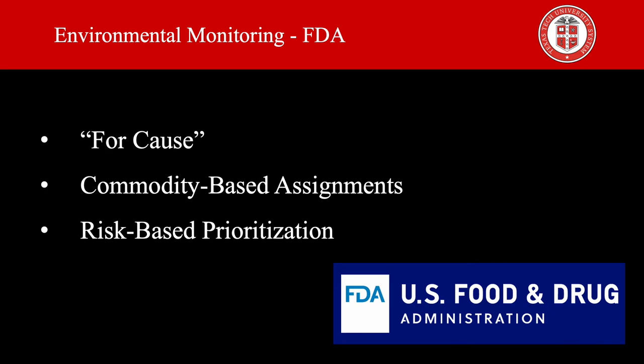The Food and Drug Administration, also known as the FDA, is the institution in charge to perform environmental sampling in food producing places. The FDA may conduct environmental sampling of an establishment for any of the following reasons: for cause, which involves the investigation of an establishment with an indication of a potential serious public health risk. A history of concern may include, for example, prior suspected or confirmed linkage to human illnesses, or recalled or seized contaminated product.